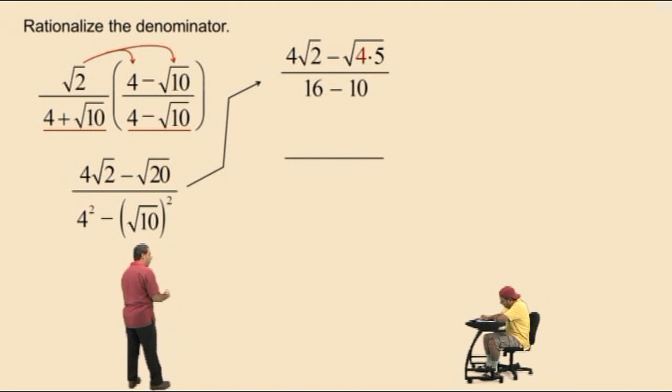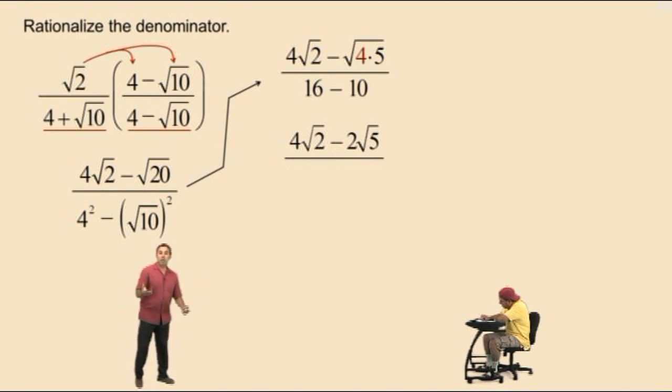Now let's bring down our work. We have 4 square roots of 2 subtract... What's the square root of 4, Charlie? 2. Okay, we'll bring that out. And don't forget, we still have to multiply by square root of 5. Our denominator is 16 subtract 10, which is 6.